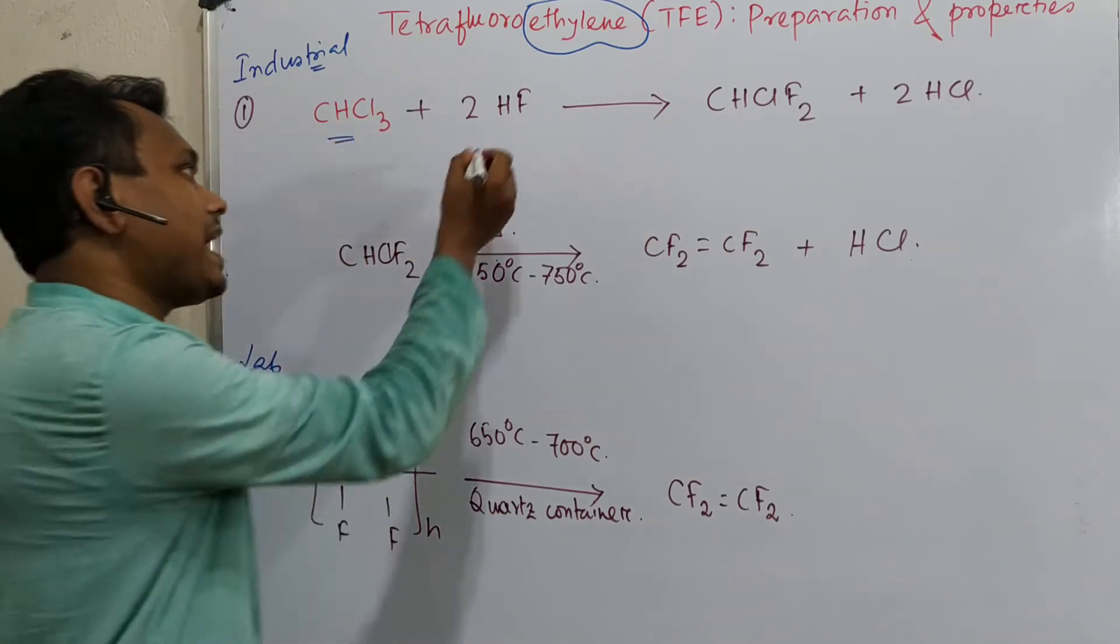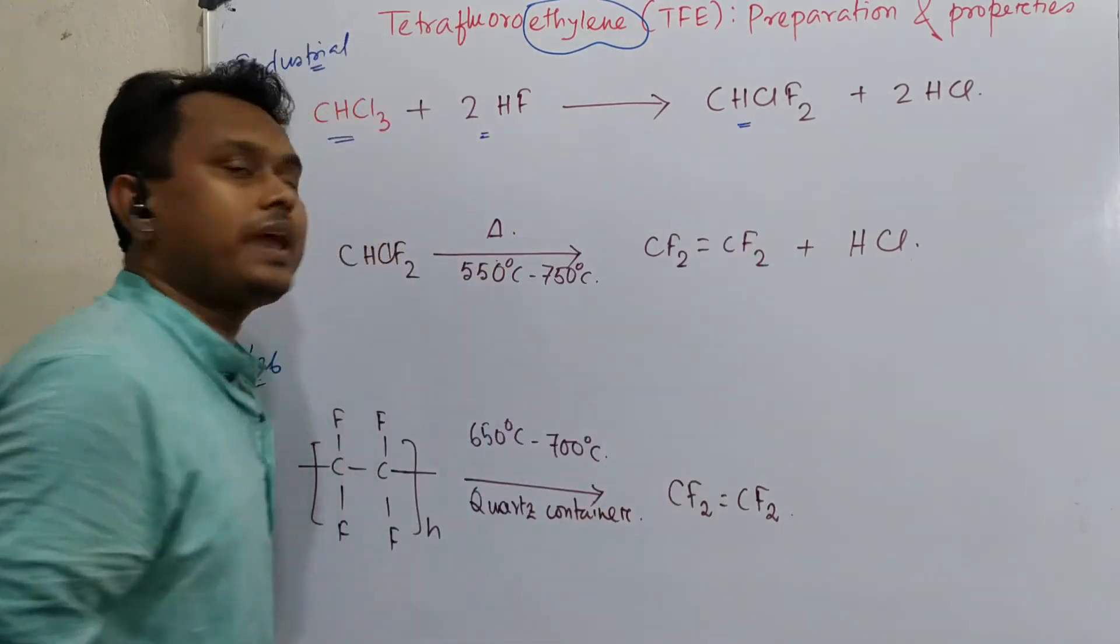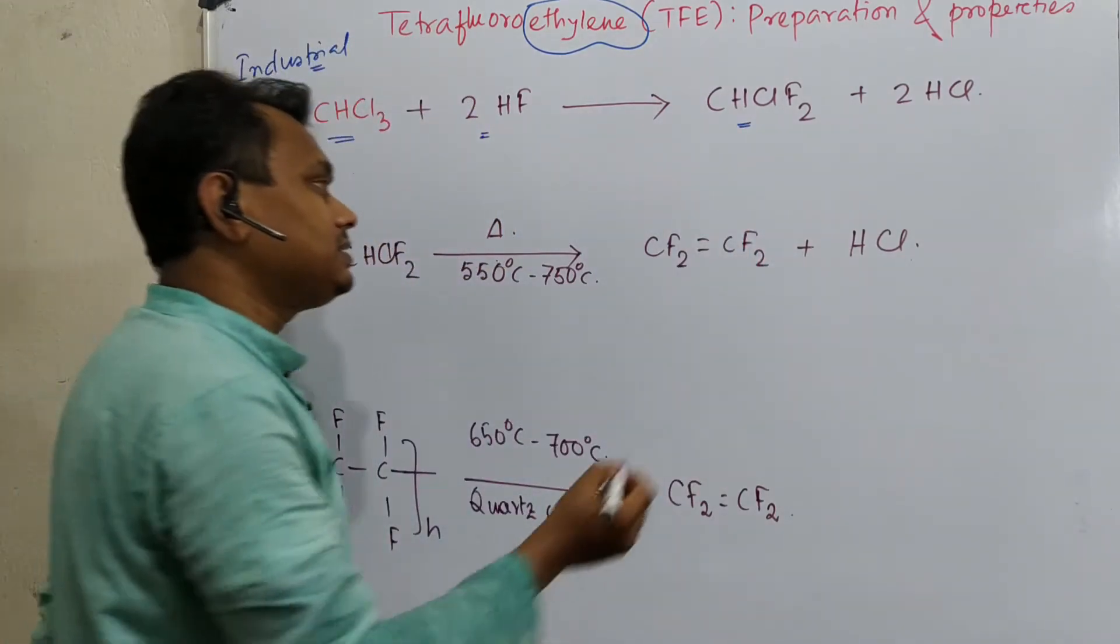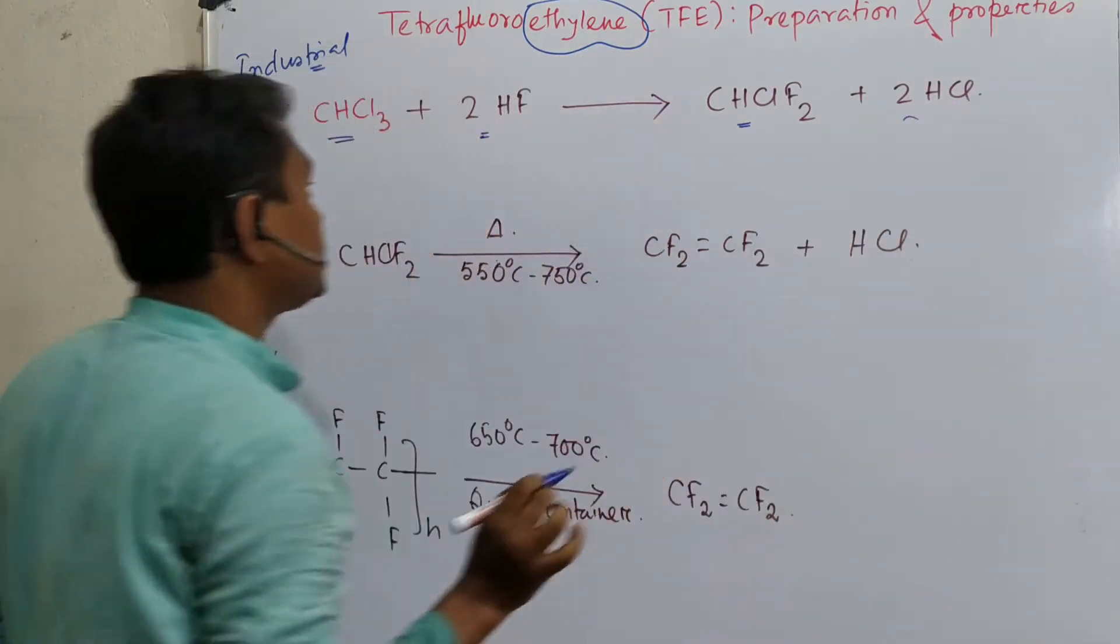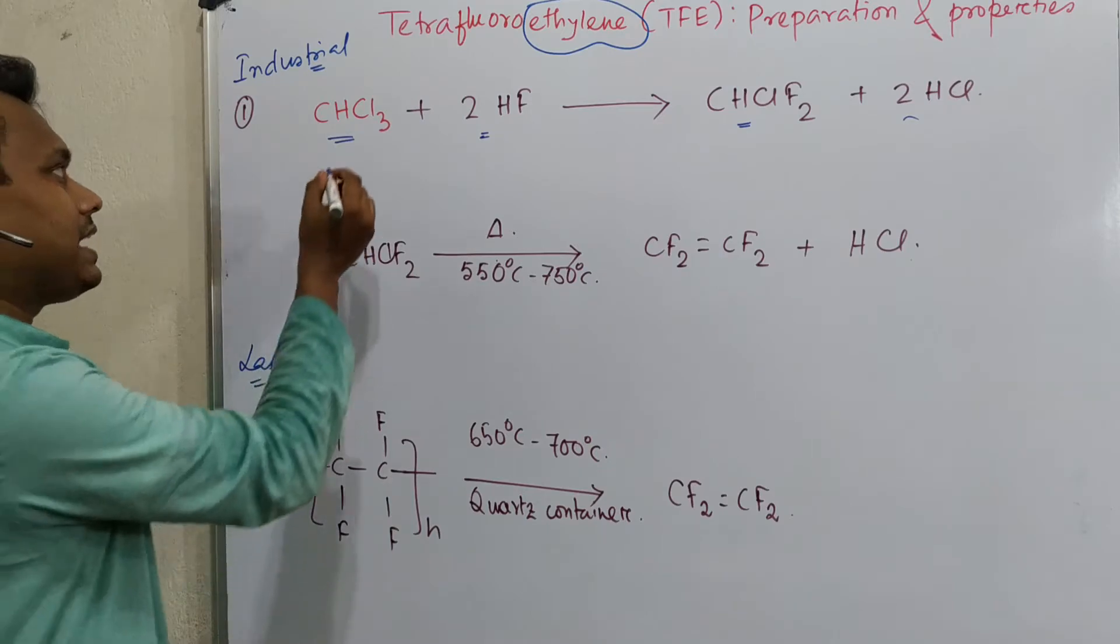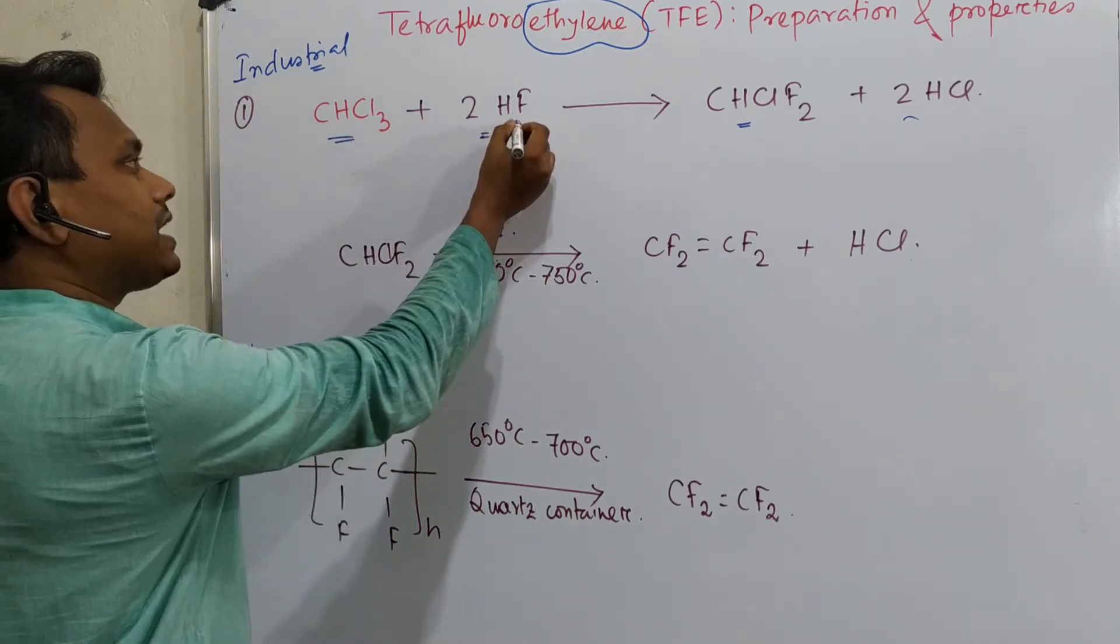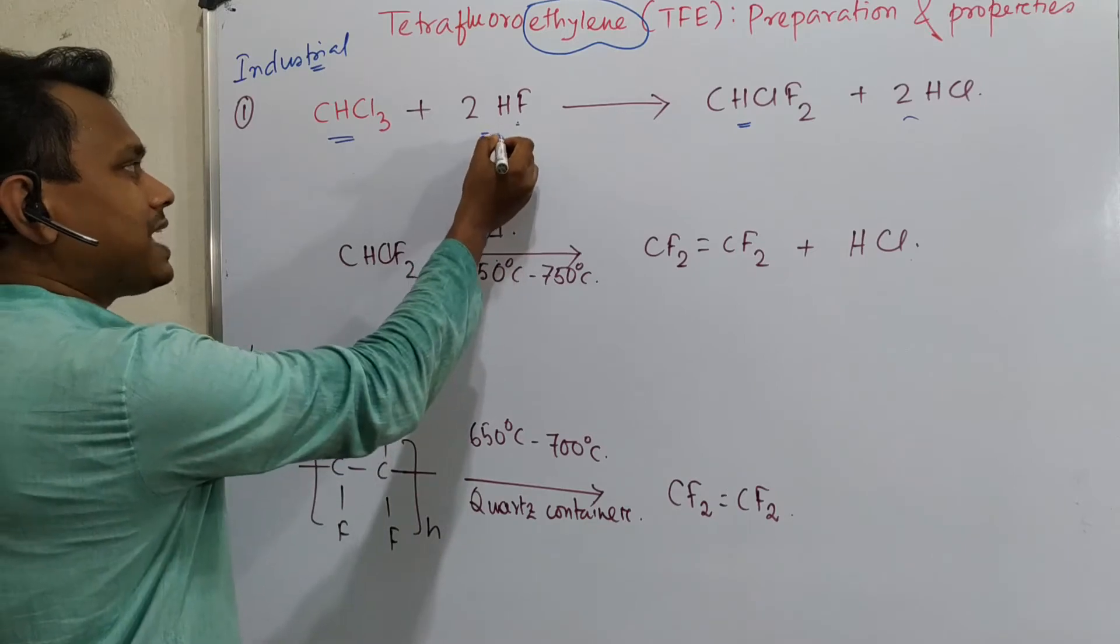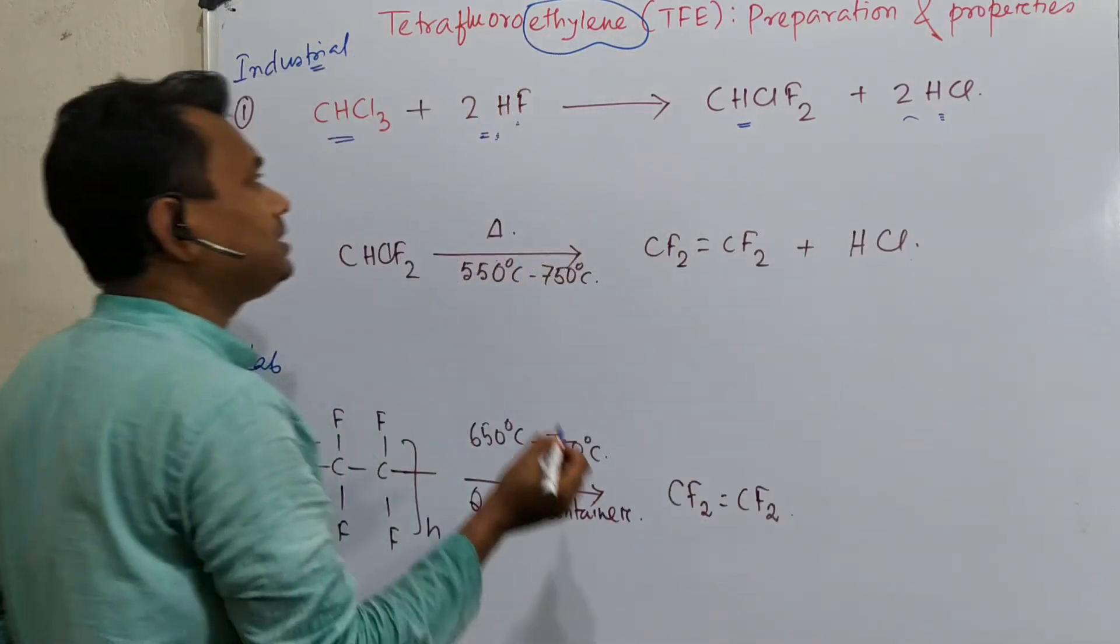So what happens in the industrial method. This is chloroform. So chloroform reacts with HF, and in this way they produce CHF2. And in this case two HCl are produced. Now look at this reaction very carefully. What I am saying. See, in this case there were three chlorines, replaceable chlorine better to say, and reacted with two HF. This HF is producing another thing, HCl.